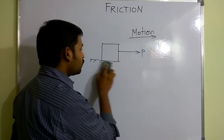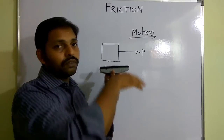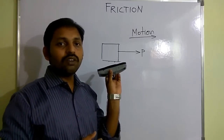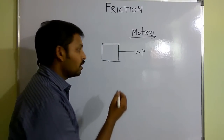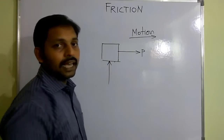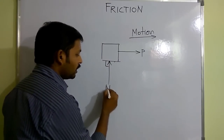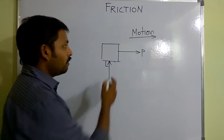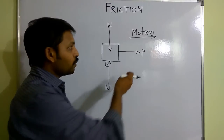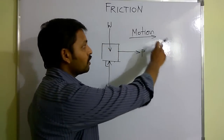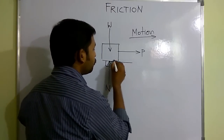I am erasing the surface contact and replacing it with a reaction. This is a block on a horizontal surface. When the block is on a horizontal surface, it is not able to move in the downward direction. Therefore, there will be a reaction in the opposite direction, perpendicular to the surface — that is the normal reaction. Weight of the block acts vertically downwards. When force P is applied, motion is along this direction, and in the opposite direction we will have the frictional force.